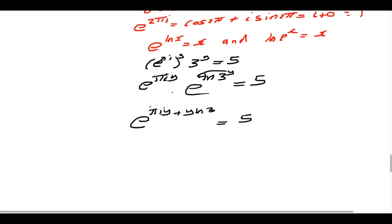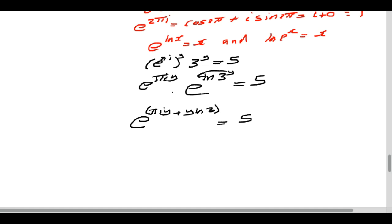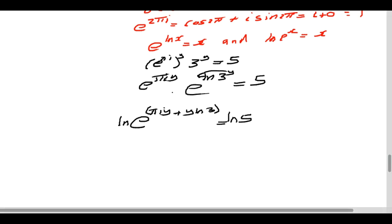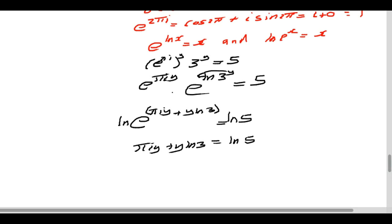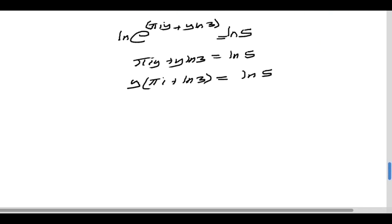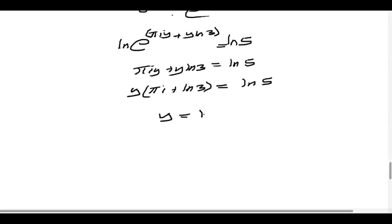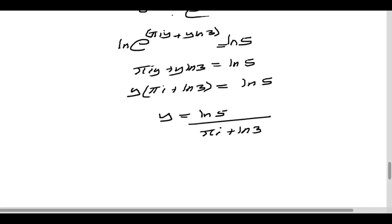To get rid of the exponential, we introduce natural logs on both sides. Applying ln to both sides, the power becomes the coefficient, giving πiy + y·ln 3 = ln 5. Since y is a common factor, we factor it out: y(πi + ln 3) = ln 5. Dividing both sides by (πi + ln 3), we get y = ln 5 divided by (πi + ln 3). That is how to solve this type of problem.